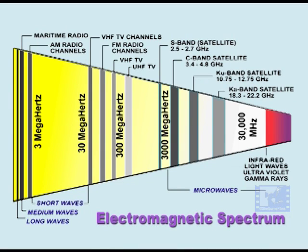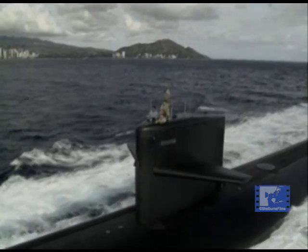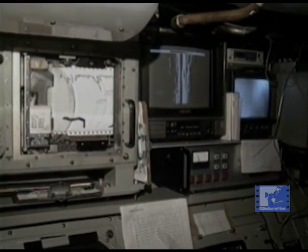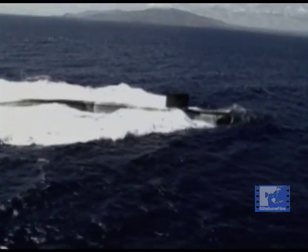The electromagnetic spectrum is the entire continuum of frequencies used to propagate signals through space. Within this spectrum, each subset or frequency band has its own unique properties. For example, the very low frequency and low frequency bands between 3 and 300 kilohertz are primarily used for communicating with submarines and ships at sea, because the long wavelengths of these signals propagate very well over and even under the water surface.